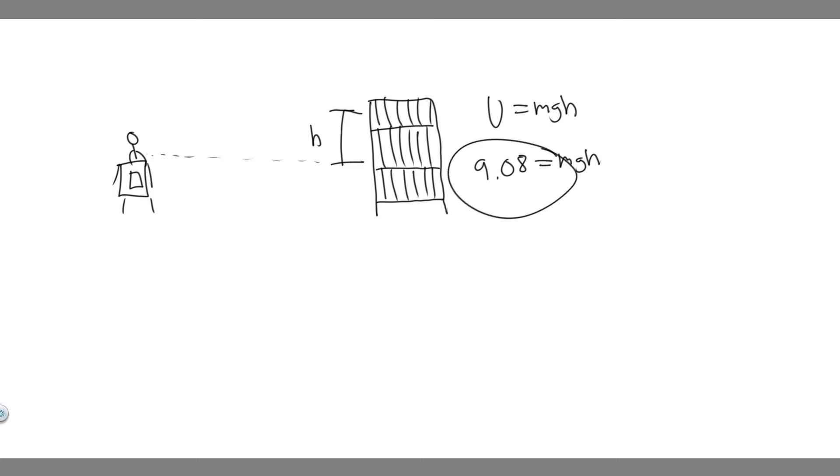The change in potential energy U is equal to MGH final minus MGH initial—the final potential energy minus the initial. But we're going to say the initial starting point is zero, so this would just be zero. So really, 9.08 is going to equal MGH final.